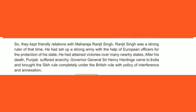Ranjit Singh attained many victories and won several states. After his death, Punjab experienced anarchy — meaning the state was running without a king. Governor General Sir Henry Hardinge came to India and brought the Sikh rule completely under British control. The policy was called the policy of interference and annexation — meaning they would interfere in everything and, whenever they wished, seize any state.